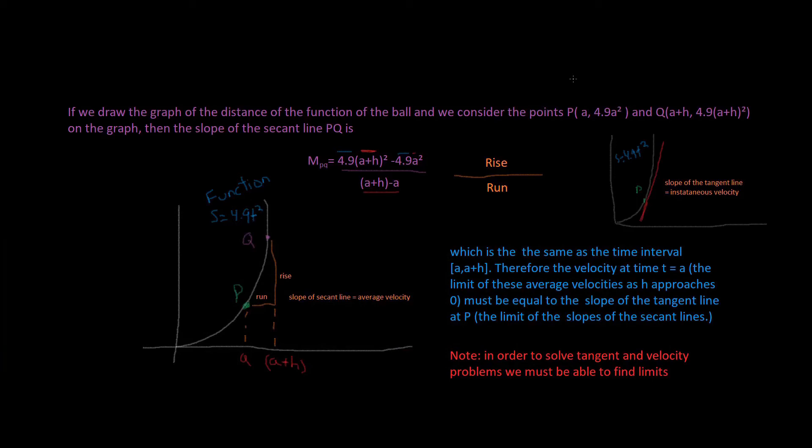In fact, there is a close connection between the tangent problem and the velocity problem. If we draw the graph of the distance function of the ball and we consider the point P(A, 4.9A squared), and Q(A plus H, 4.9(A plus H) squared) on the graph, then the slope of the secant line PQ is...